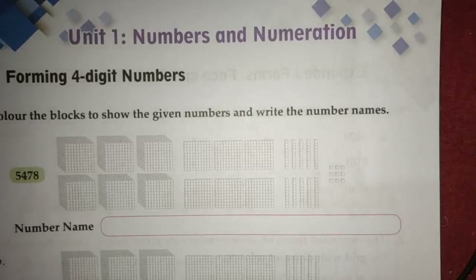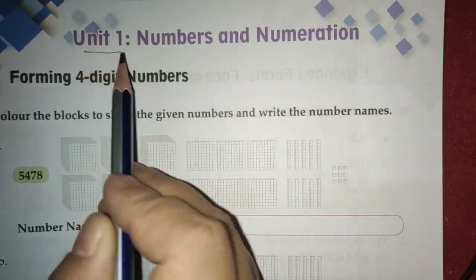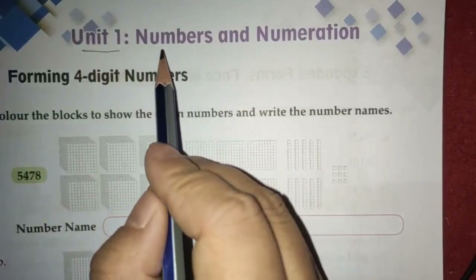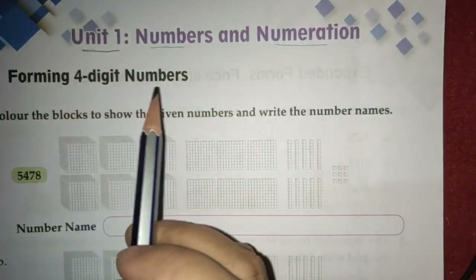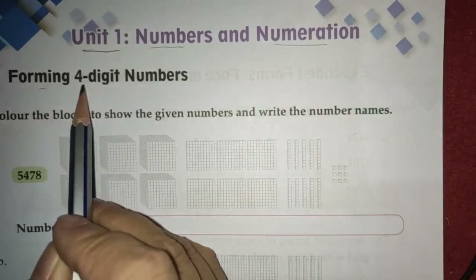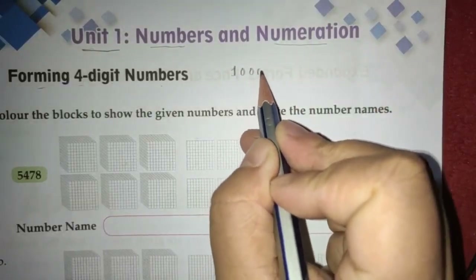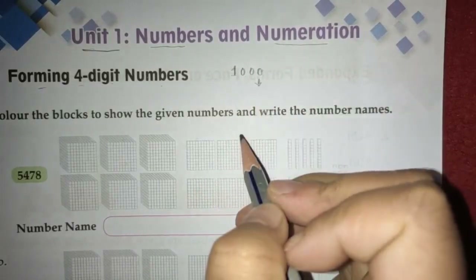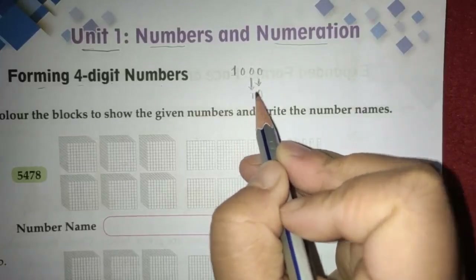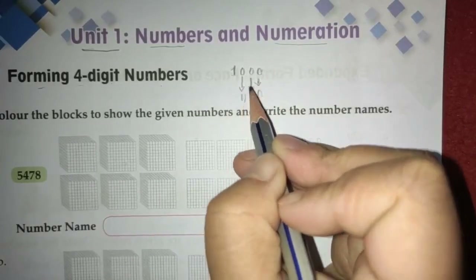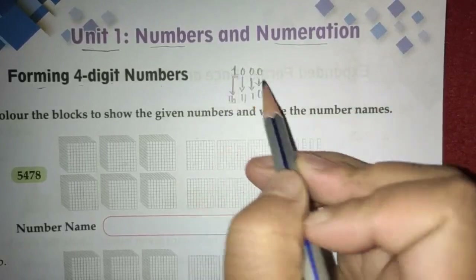Hello children, welcome to the math class. Today we are starting the first unit of mental maths. The name of the chapter is Numbers and Numerations. We will start by forming four-digit numbers. A four-digit number has four digits and, looking at place value, goes ones, tens, hundreds, and thousands — so a four-digit number ends in the thousands position.